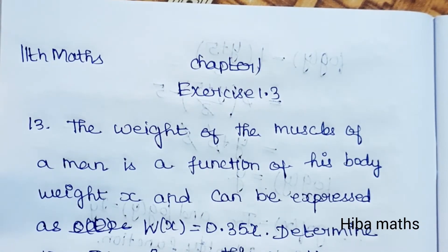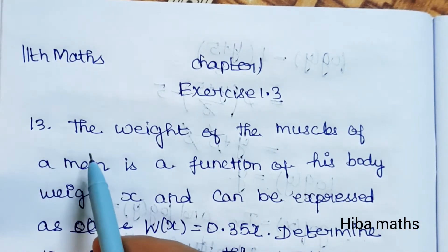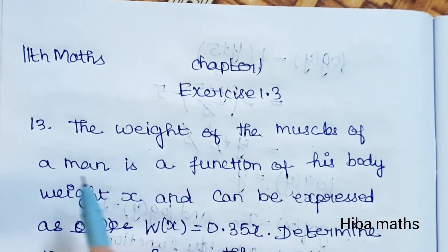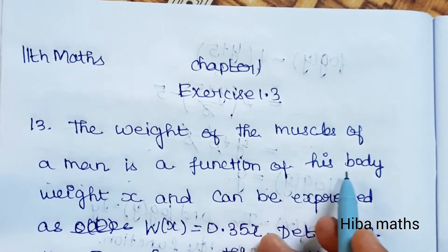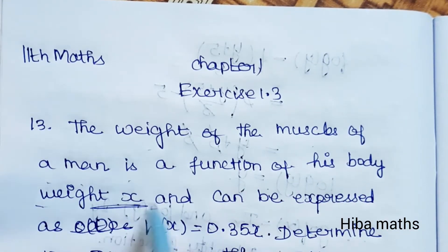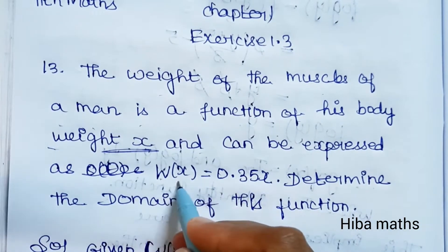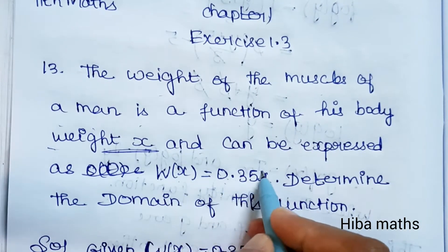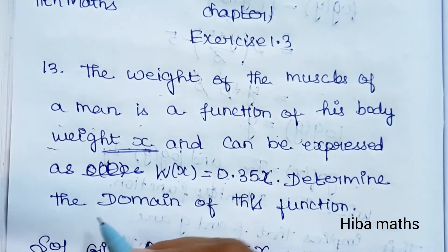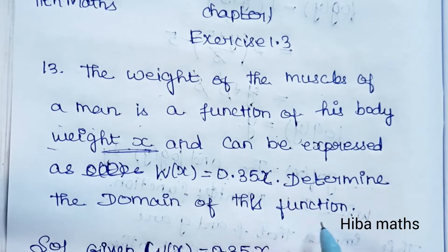Hello students, welcome to Hiba Maths, 11th standard, Chapter 1, Exercise 1.3, Question 13. The weight of the muscles of a man is a function of his body weight x, so x is the body weight and can be expressed as w(x) = 0.35x. Determine the domain of this function.